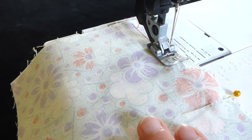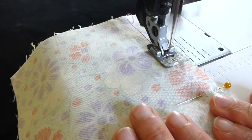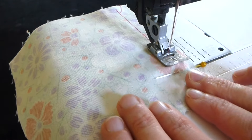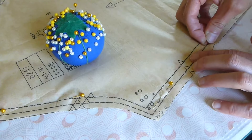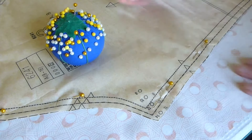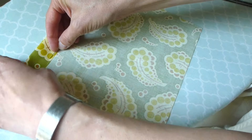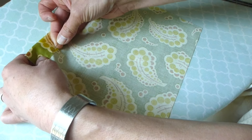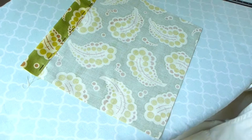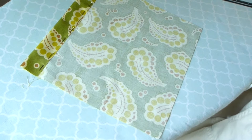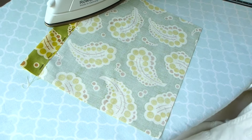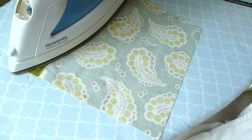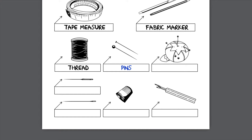Pins are used to keep fabric layers aligned while sewing and to secure pattern pieces to fabric. They are also used to hold fabric in place while ironing. In that case, I use all metal pins so the heat from the iron does not melt the heads. Label the pins on your study guide.